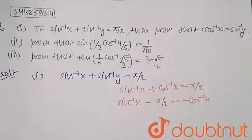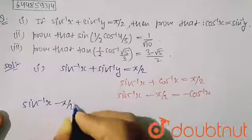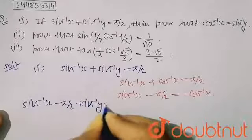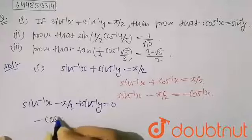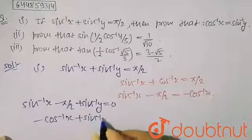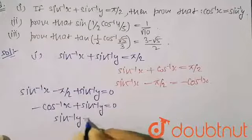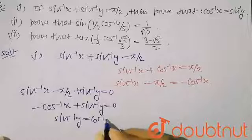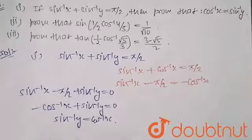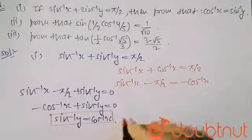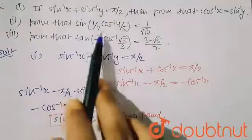This equation can be rewritten as sin⁻¹x − π/2 + sin⁻¹y = 0. Substituting −cos⁻¹x at the place of sin⁻¹x − π/2, we get −cos⁻¹x + sin⁻¹y = 0, which gives cos⁻¹x = sin⁻¹y. This is exactly what we had to prove. Hence proved.